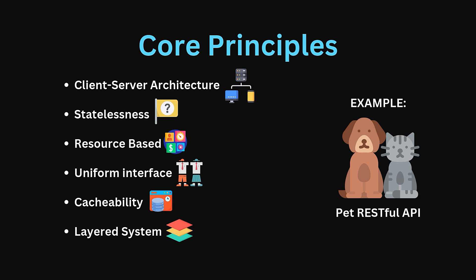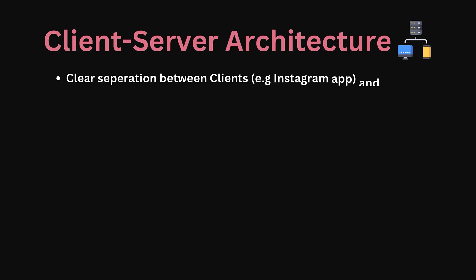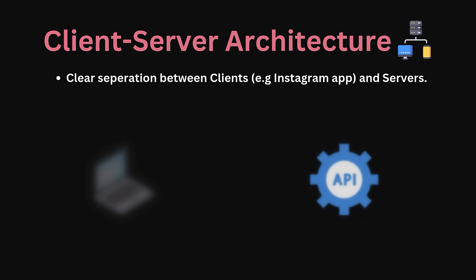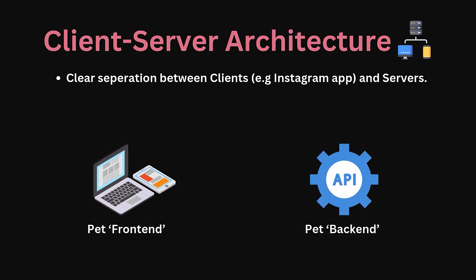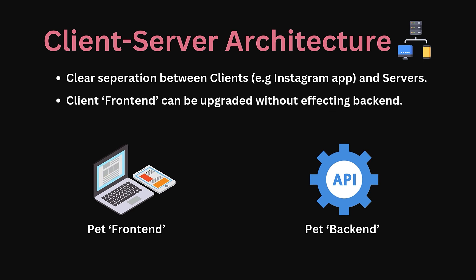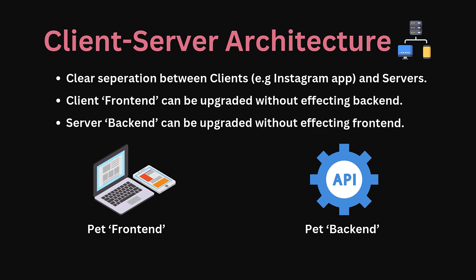First, client-server architecture. In REST, a clear separation exists between clients — the user interfaces and consumers, such as your Instagram app — and servers, allowing each to evolve independently. In our example, the mobile app that pet owners use can be updated with a new interface and features without changing the pet API server. Similarly, the server can be upgraded without requiring updates to the mobile app, as long as the API contract remains the same.